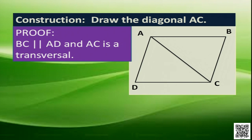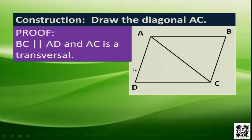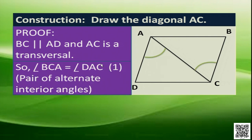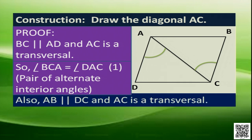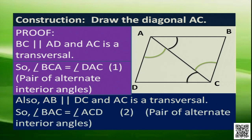BC is parallel to AD, and angles BCA and DAC are equal because they are alternate interior angles. Similarly, AB is parallel to CD and AC is the transversal, so another pair of alternate interior angles — angle BAC and angle ACD — are equal. We name these as equations 1 and 2.